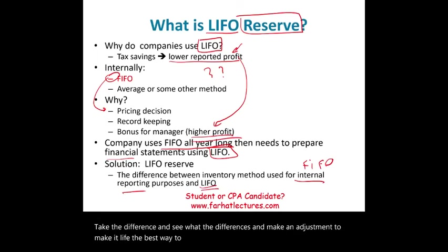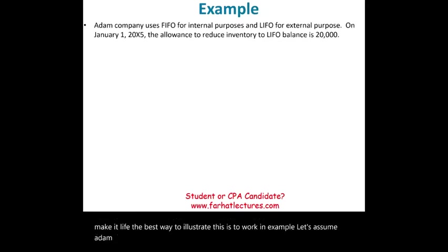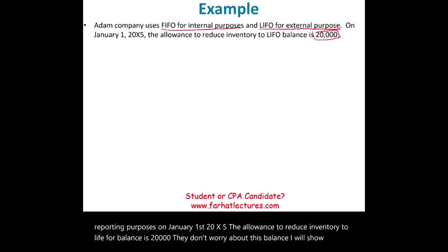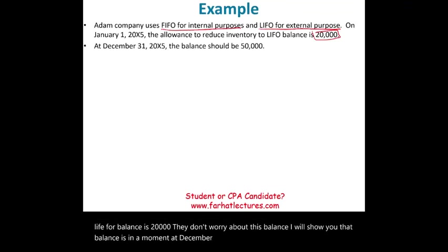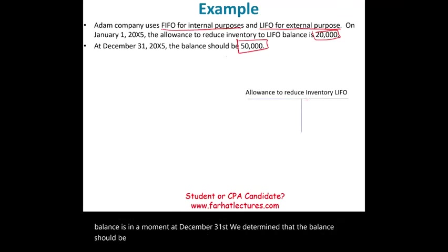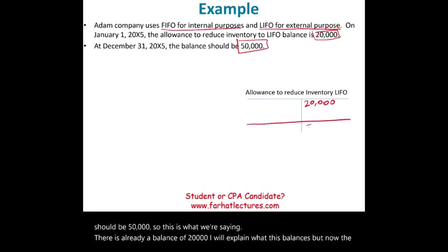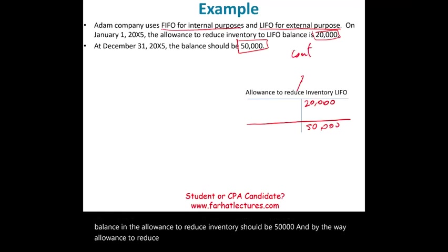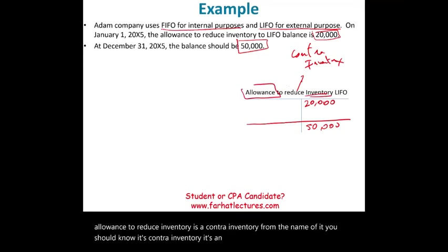The best way to illustrate this is to work an example. Let's assume Adam Company uses FIFO for internal reporting purposes and LIFO for external reporting purposes. On January 1st, 20X5, the allowance to reduce inventory to LIFO balance is $20,000. At December 31st, we determined that the balance should be $50,000. The allowance to reduce inventory is a contra-inventory account — from the name of it, you should know it reduces inventory, which is why it has a credit balance.